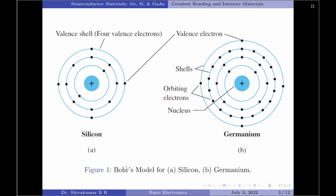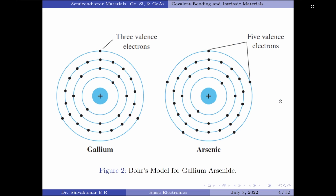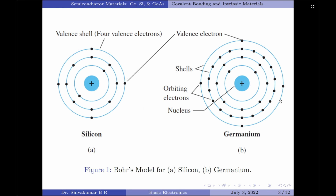Figure 1 here indicates the Bohr's model for silicon and germanium, and figure 2 here indicates the Bohr's model for gallium arsenide. Let me first discuss silicon and germanium.